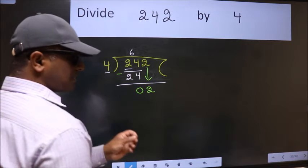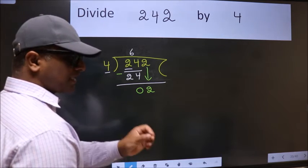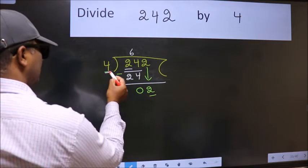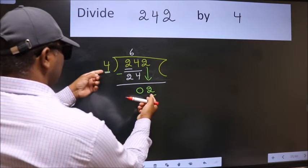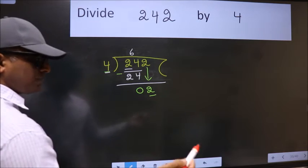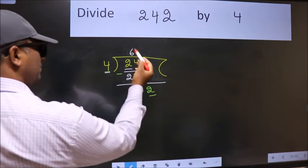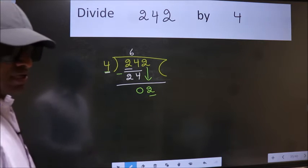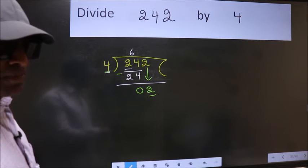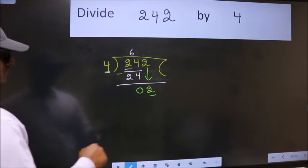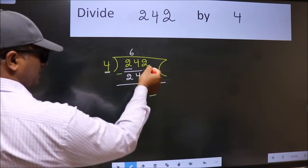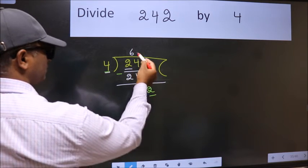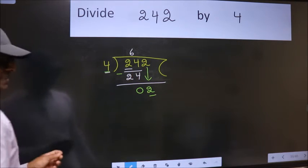After this step, the mistake happens. Here we have 2 and here 4. 2 is smaller than 4. So what many do is they directly put dot, take 0. Which is wrong. Why is it wrong? Because just now you brought this number down, and in the same step you want to put dot, take 0. Which is wrong.